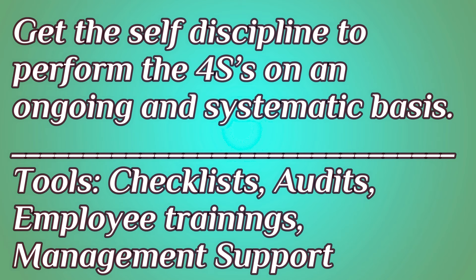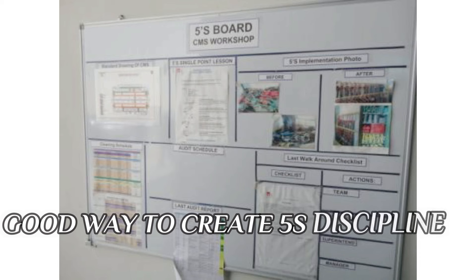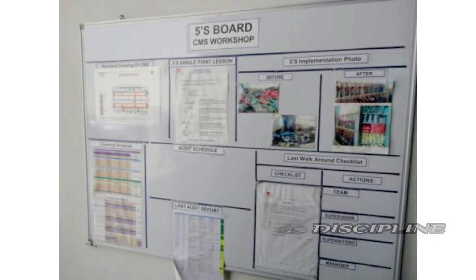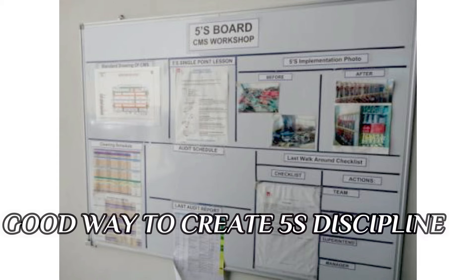This 5S philosophy will collapse if you do not have management support. Management has to demonstrate leadership and support in terms of involvement and reward and recognition given to people and departments who are compliant with 5S. One good practice is to create a 5S board in various departments — it can have results of the last audit, new 5S practices identified by the department, and responsibilities for the 5S. This is a very good way of spreading awareness and communication for self-discipline.